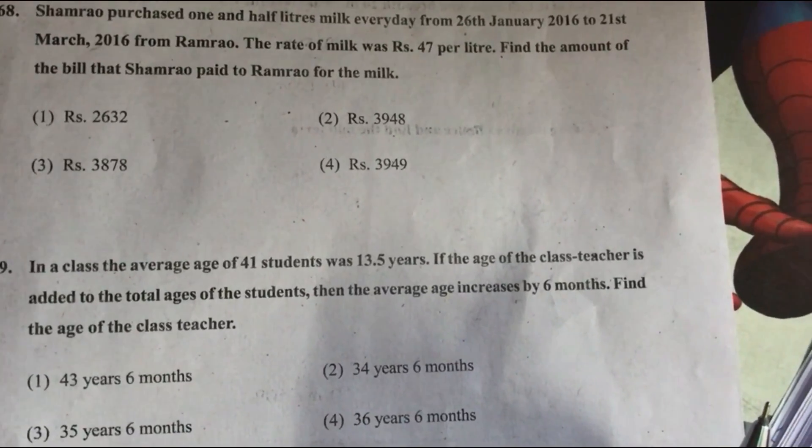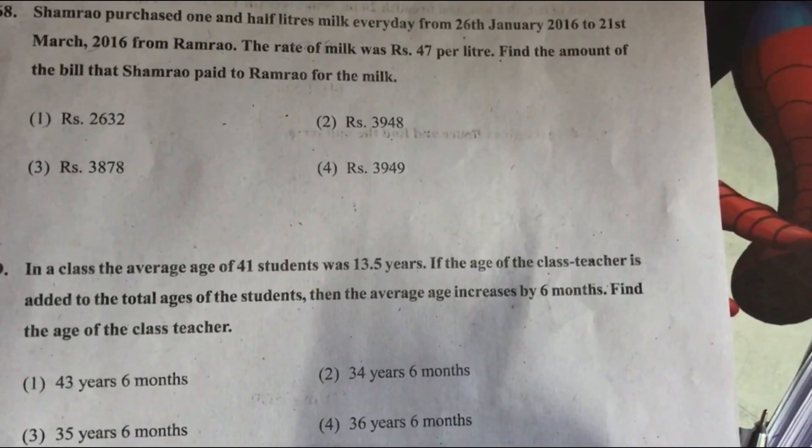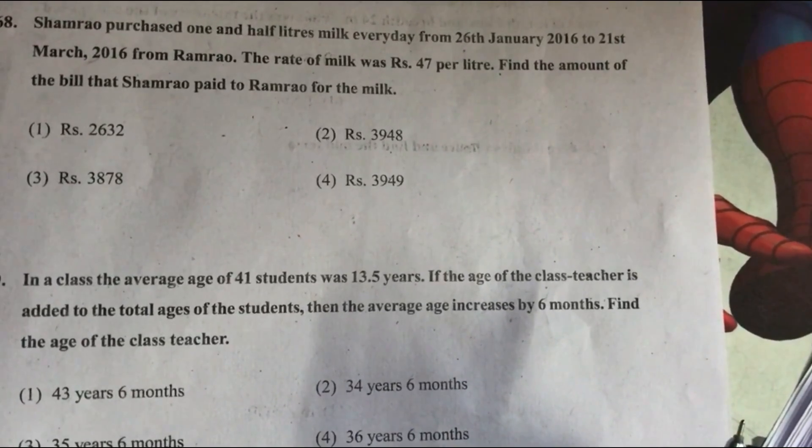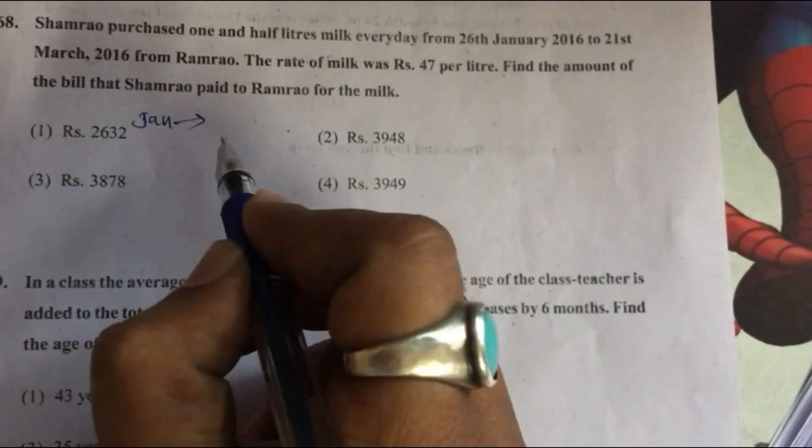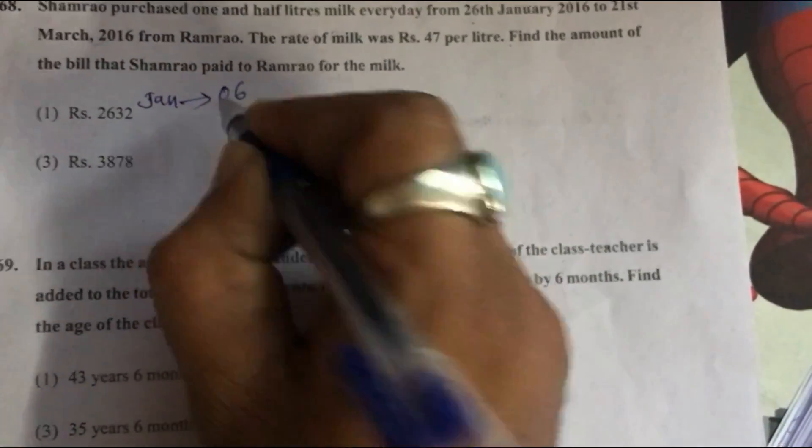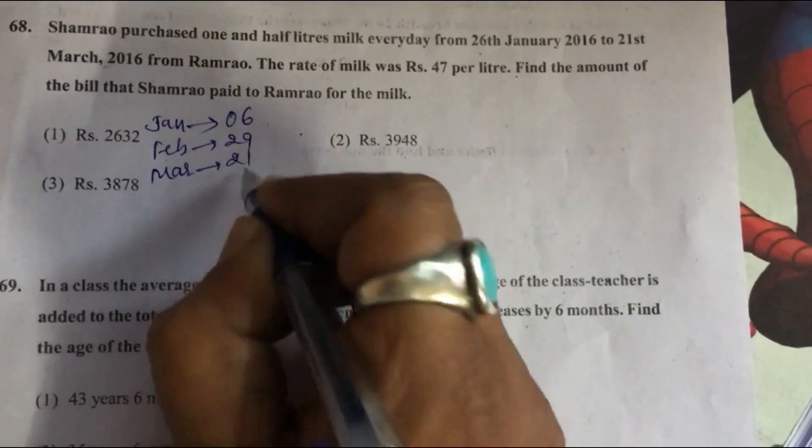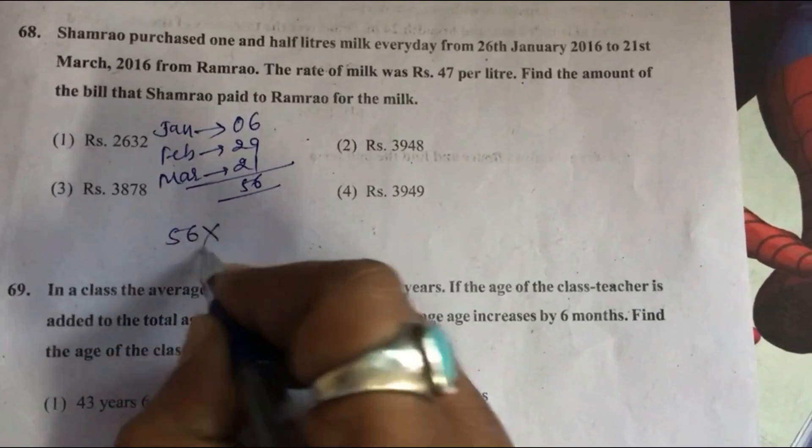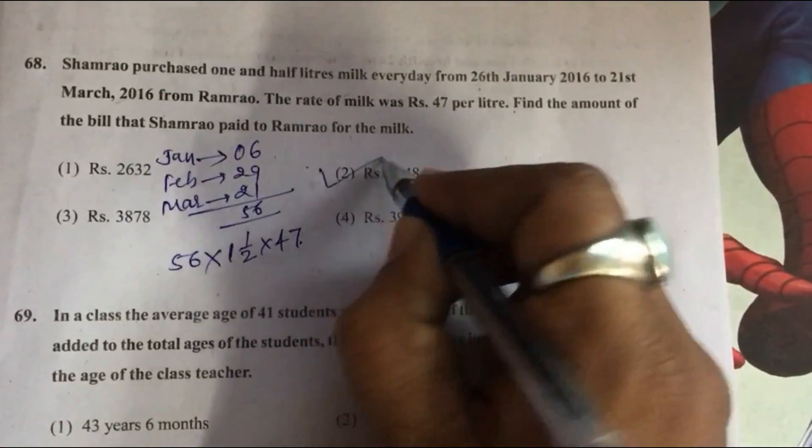Question 68: Sham Rao purchased 1.5 liter milk every day from 26th January 2016 to 21st March 2016 from Ram Rao. The rate of milk was Rs 47 per liter. Find the amount of the bill. In the month of January, from 26th to 31st, 6 days. As it is leap year, February has 29 days. March has 21 days. So total days are 56. 56 into 1.5 liter into 47, option 2, 3948.